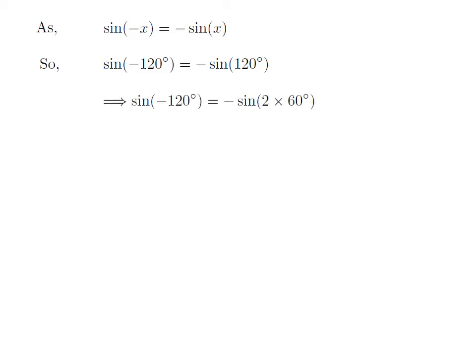As 120 degrees is equal to 2 times 60 degrees, sine of minus 120 degrees is equal to minus sine of 2 times 60 degrees.